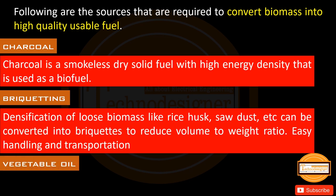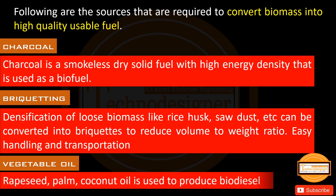Vegetable oil: rapeseed, palm, and coconut oil are used to produce biodiesel.